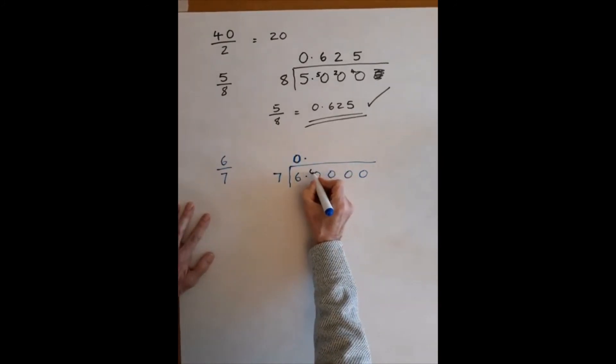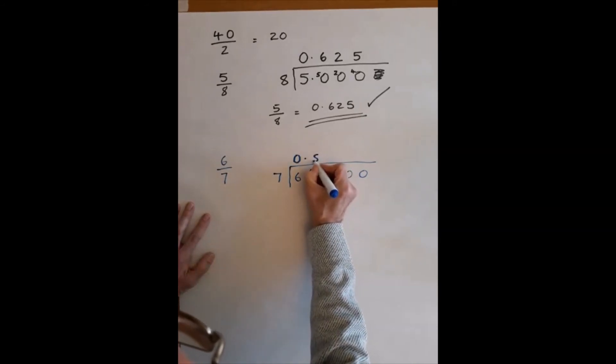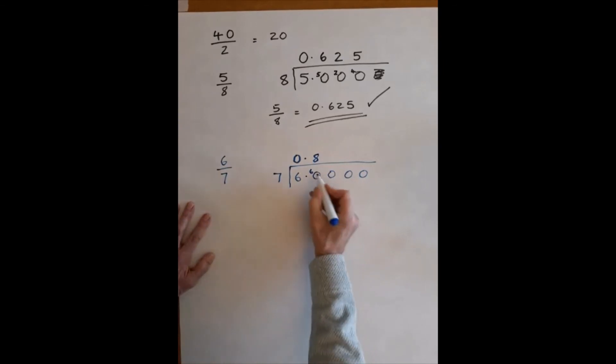How many times does 7 go into 60? Well, 8 times 7 make 56, so our first number is 8. 8 times 7 make 56, and that leaves us 4 left over.